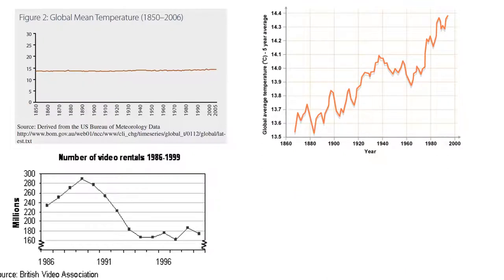Up to now, all the graphs we've looked at have the vertical scale starting at zero. Just like this graph - it starts at zero and goes to 30 - and we're measuring global temperature from 1850 to 2005. That line looks very flat, so using that graph I would conclude that temperatures aren't changing and there is no global warming.